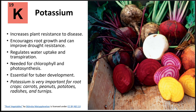Potassium is essential for plant resistance to disease and supports photosynthesis and chlorophyll development. It also encourages root growth and water uptake, resulting in drought resistance. Tubers are part of the root system, and since potassium encourages root growth, it's also important for tuber development in crops such as peanuts, carrots, and potatoes.